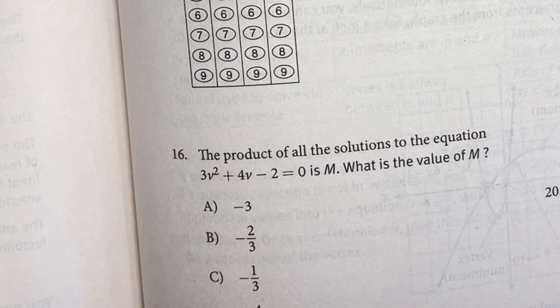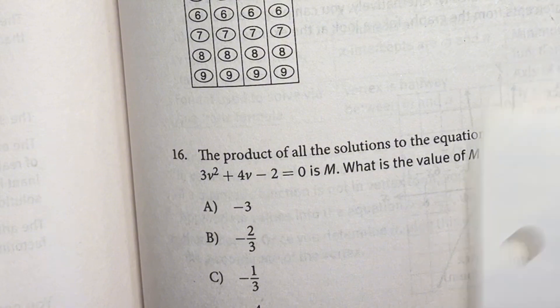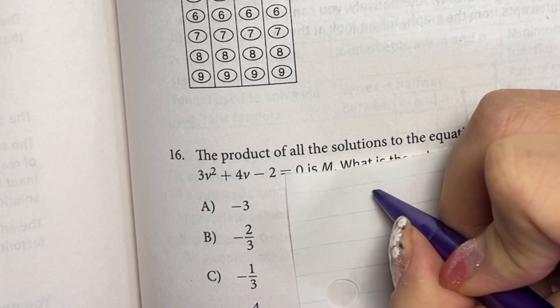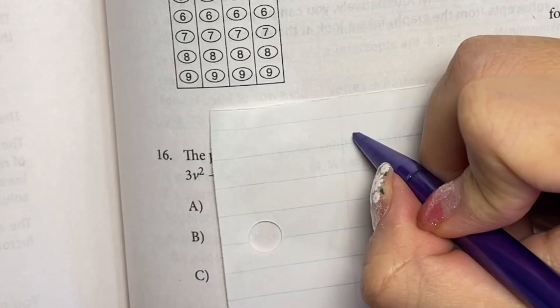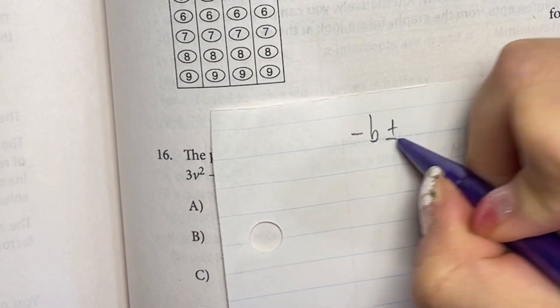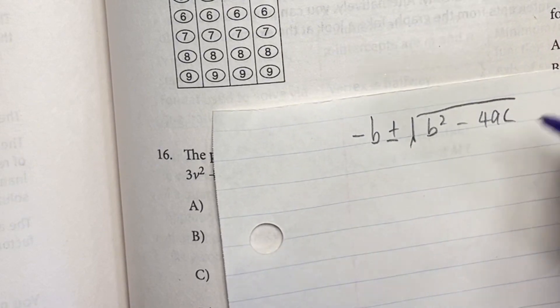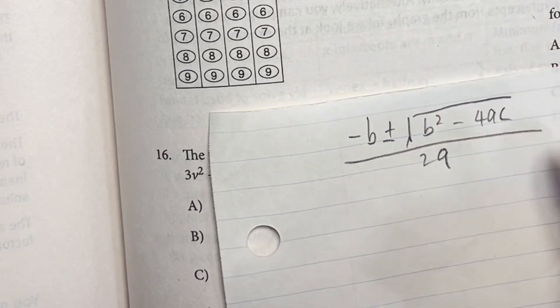First, we should apply the quadratic formula. What is the quadratic formula? The formula is -b ± √(b² - 4ac) divided by 2a. This is the quadratic formula.